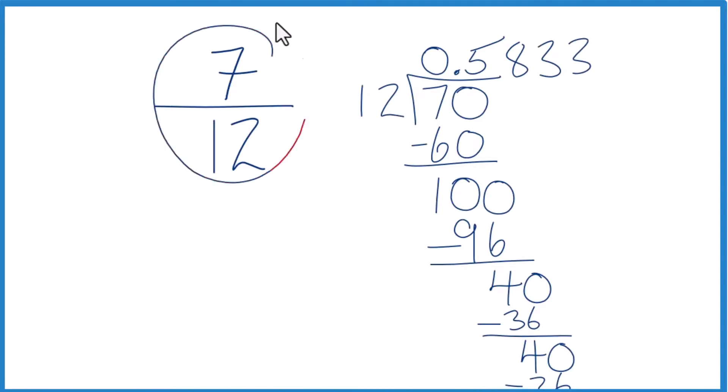So when we write the fraction 7 twelfths as a decimal, we get 0.5833.